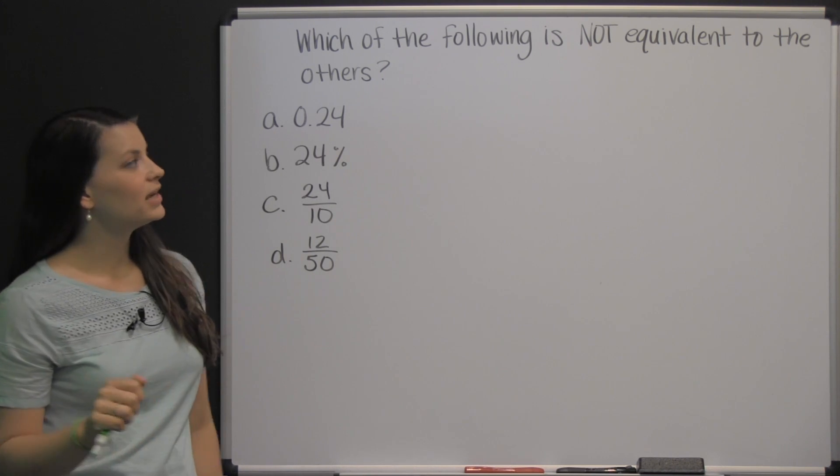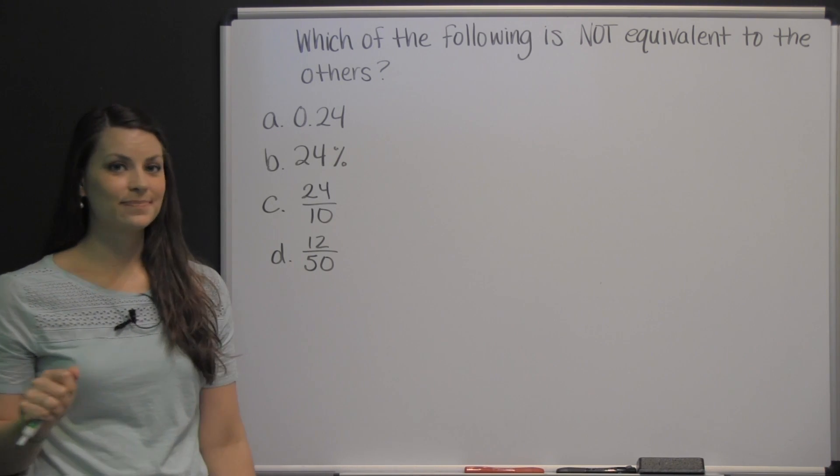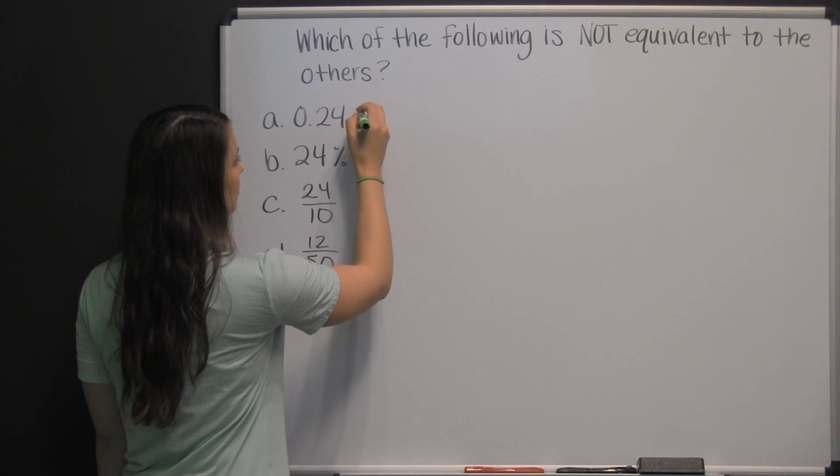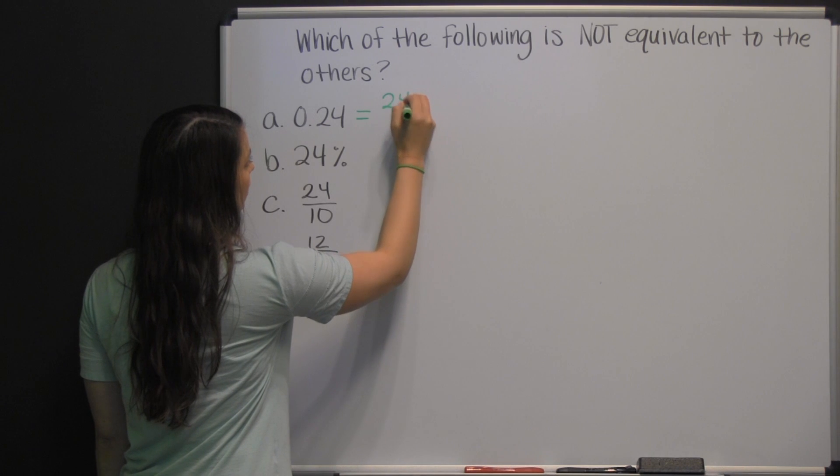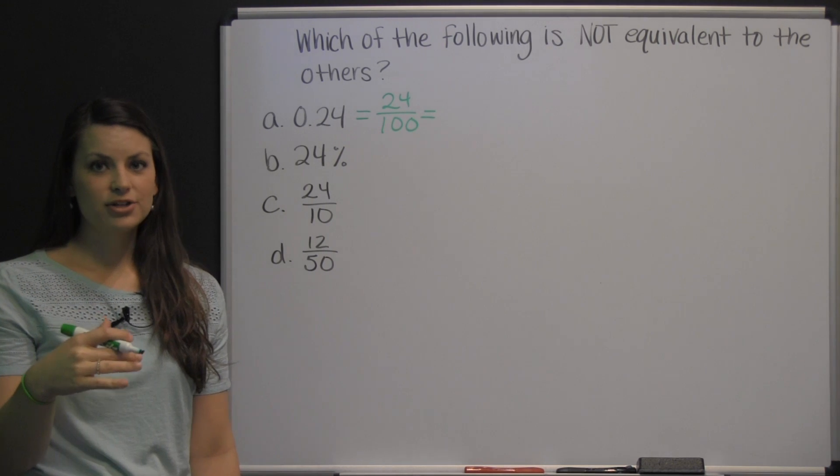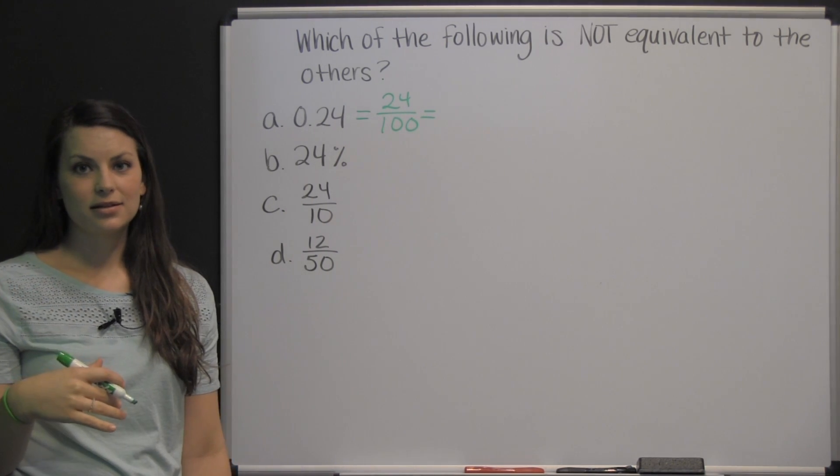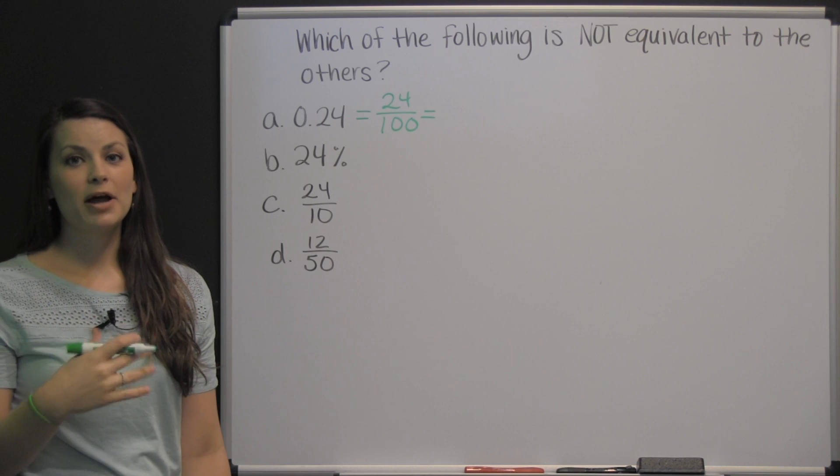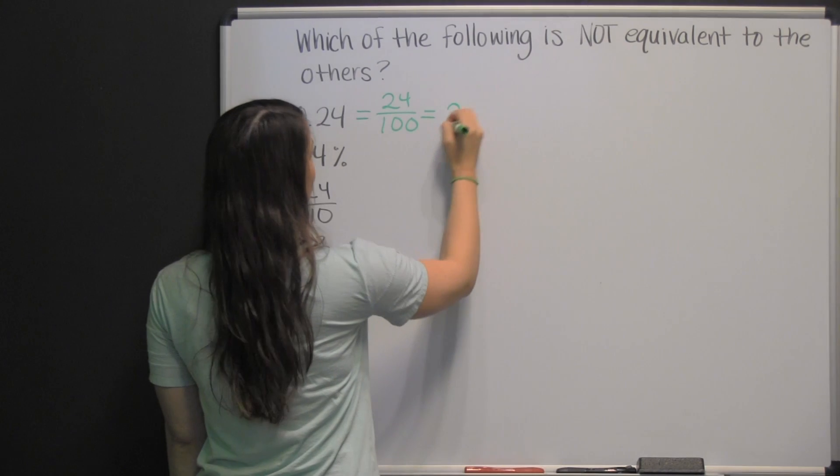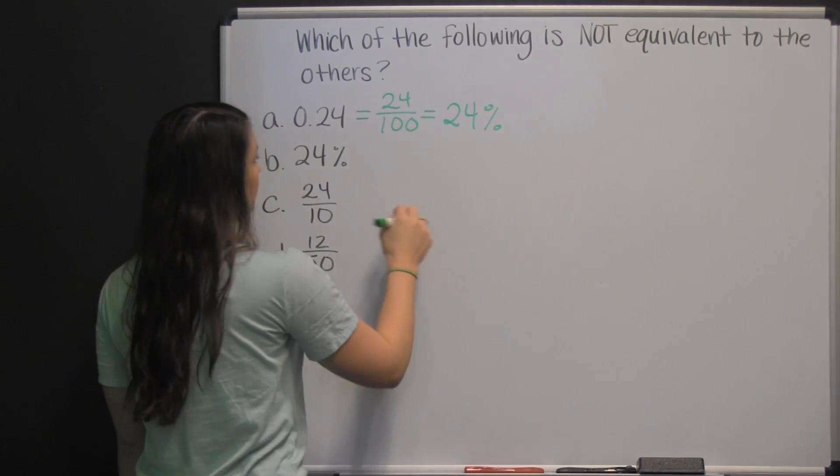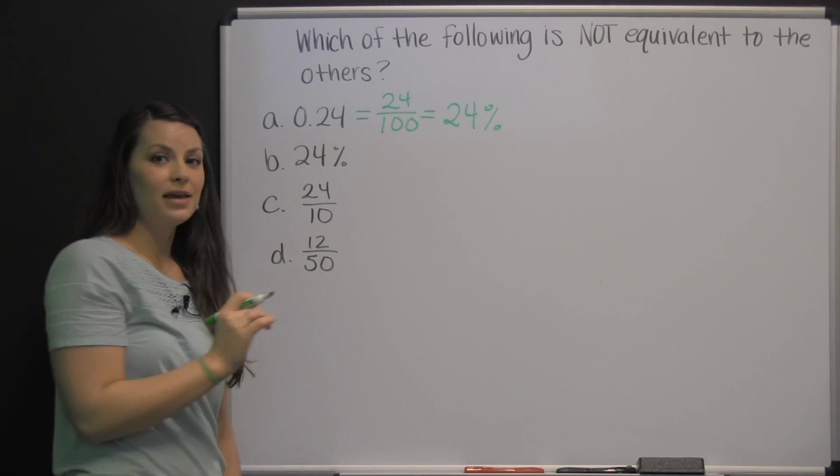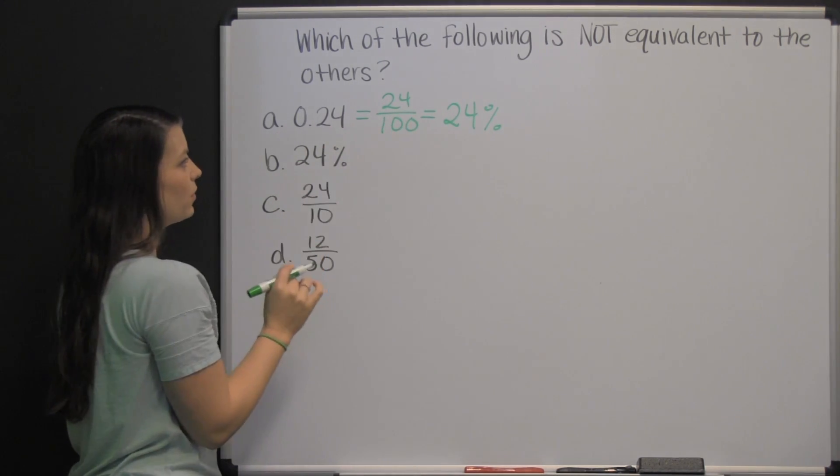Which of the following is not equivalent to the others? This is read as 24 hundredths, which means it can be written as 24 hundredths. You can also write per 100 as percent, because that's literally what percent means. Cent is for 100. So that is 24 percent. Which means this one can't be our answer, since it is like B. It's just another way to represent 24 percent.